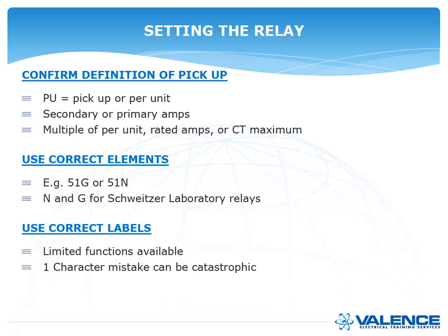The other thing you want to do is make sure you use the correct elements. You could have an element called 51G or 51N. If you had programmed a lot of Schweitzer 321s in your career, you would think that N means neutral or the residual neutral inside the relay. But if somebody said 'set a 311C relay,' which is a different model, it has an N input. So if you programmed the 311 relay like a 321, you would actually be programming something that may not have an input signal connected to it, and it may not ever work.